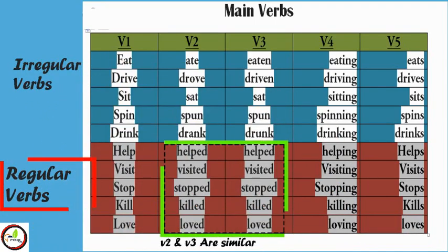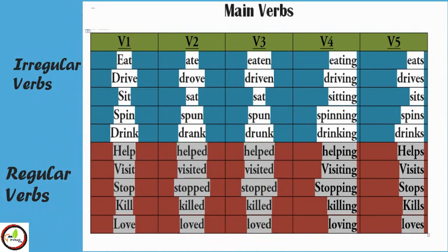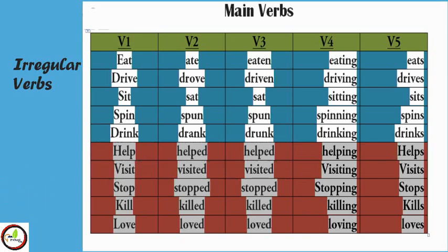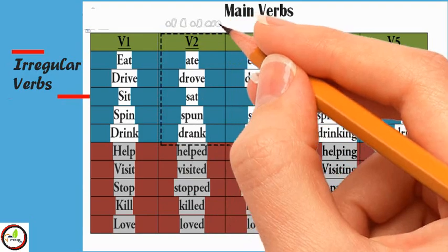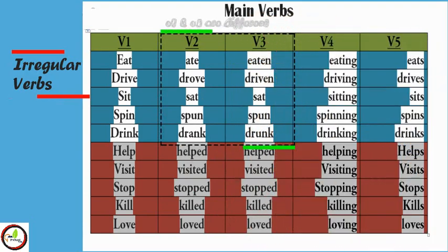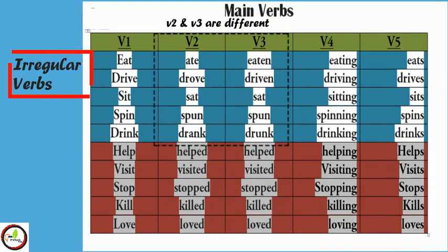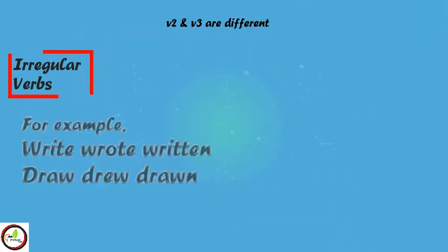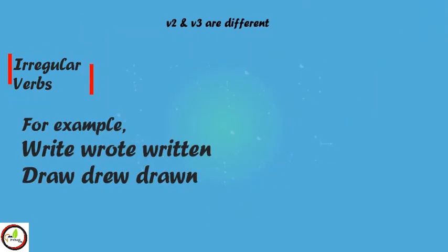Type 3: Regular and Irregular verbs. For regular verbs, Verb 2 and Verb 3 are similar in spelling. For example: help, helped, helped; visit, visited, visited. For irregular verbs, Verb 2 and Verb 3 are different. For example: write, wrote, written; draw, drew, drawn.